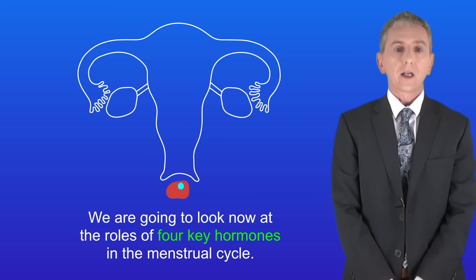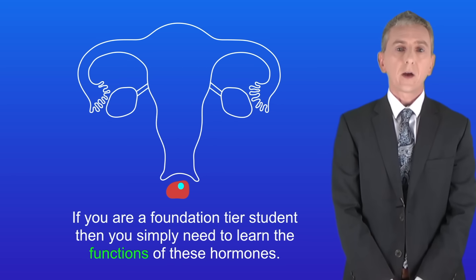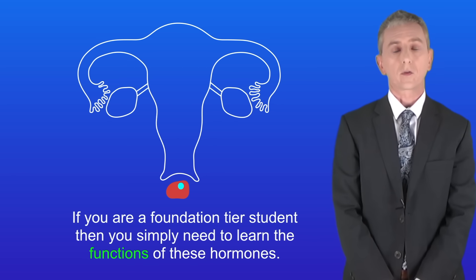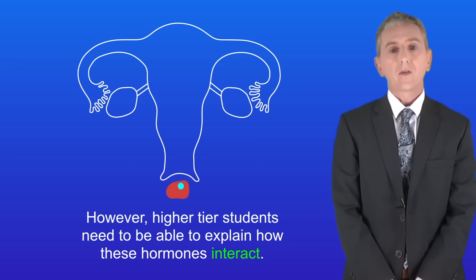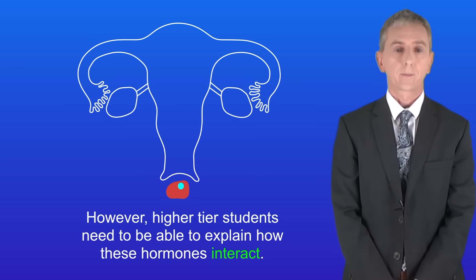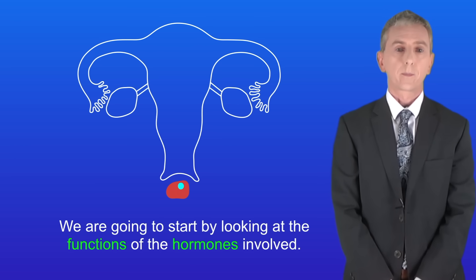We're going to look now at the roles of four key hormones in the menstrual cycle. If you're a foundation tier student then you simply need to learn the functions of these hormones. However higher tier students need to be able to explain how these hormones interact. So we're going to start by looking at the functions of the hormones involved.